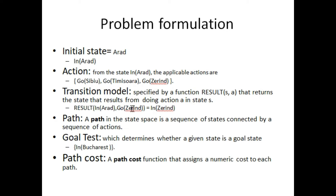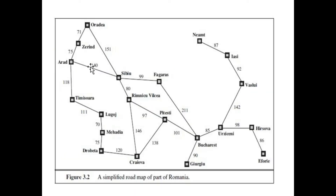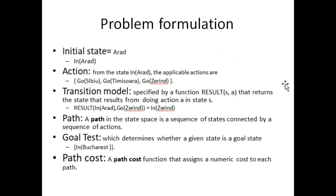If we are going to city Zerind, then our action is Z and our current state is the initial state — the current location where our agent is present. If we move from Arad towards Zerind, the resultant state will be Zerind. This is how we represent the state in the transition model: Result(Arad, go-to-Z) gives us the state in(Zerind).